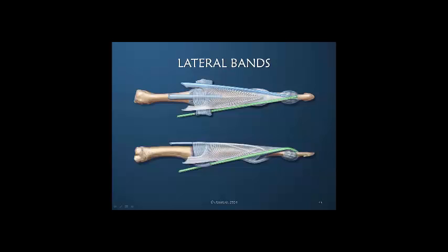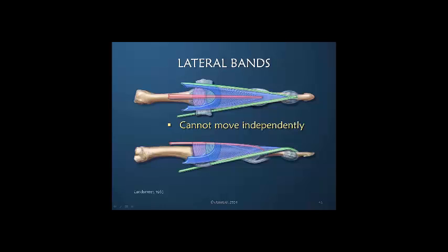There is both lumbrical and interosseous influence on the radial aspect. The interosseous insertion is shared and goes in multiple directions, so its contribution to the lateral band is somewhat less. The same is true on the ulnar side — the interosseous doesn't go solely to the lateral band. We return to the concept that none of the parts of the dorsal apparatus can move independently. Although they may carry different amounts of tension, they are working together to create movement.